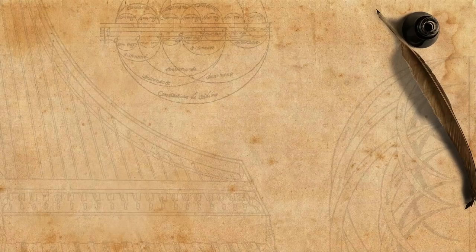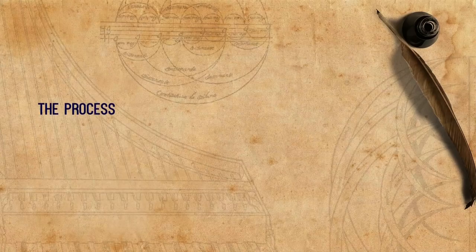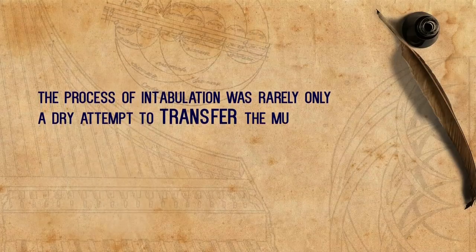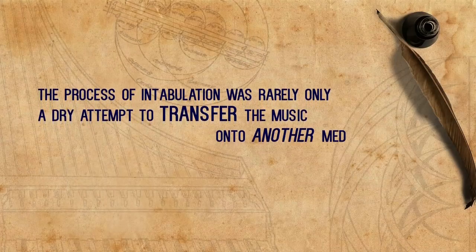Until now, we discussed only things that got lost during the intabulation process — the disadvantages of intabulations compared with the complete original parts. But there are things that appear only in the intabulations and not in the original parts. The process of intabulation was rarely only a dry attempt to transfer the music onto another medium.